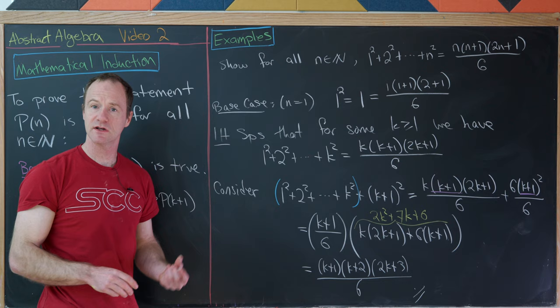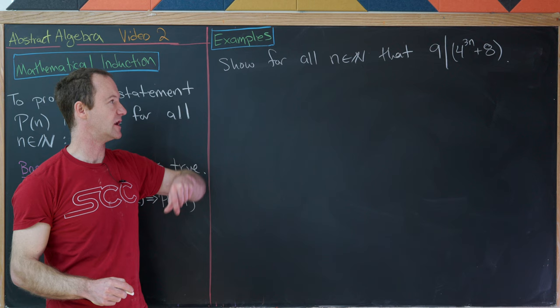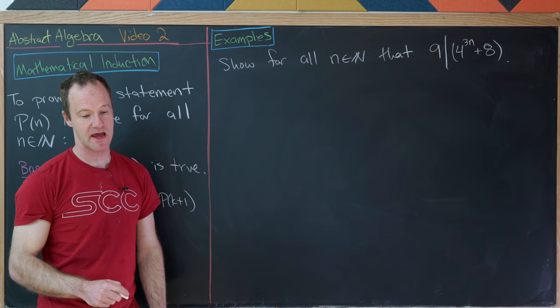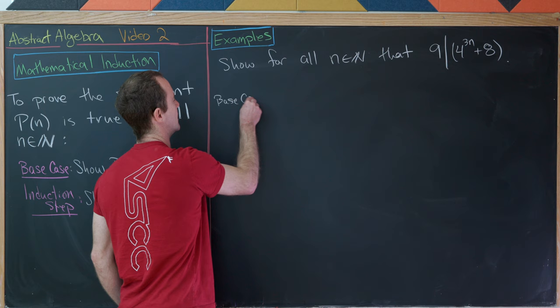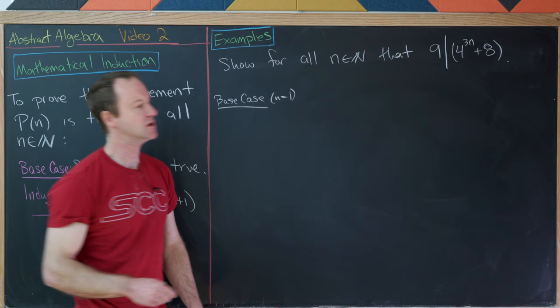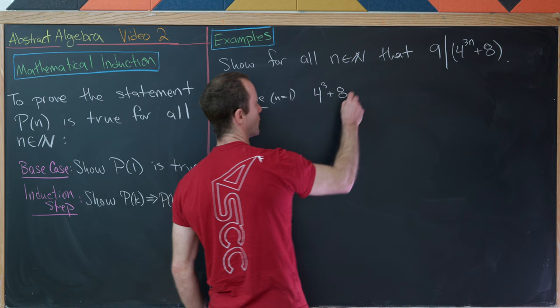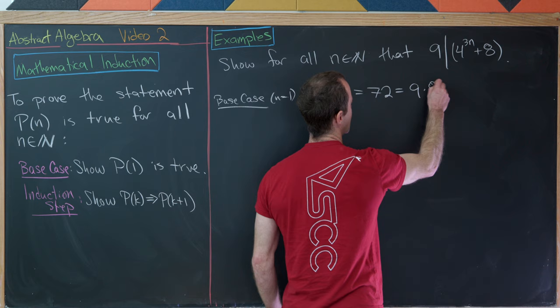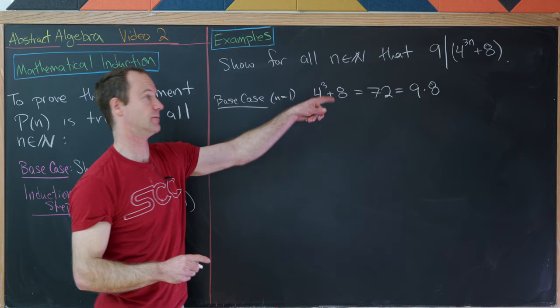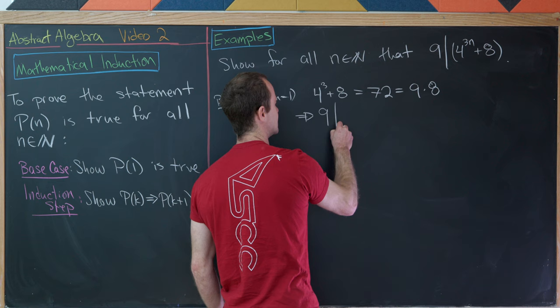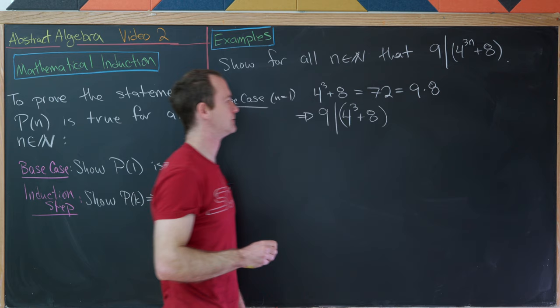For our next example, we'll show for all natural numbers N that 9 divides 4^(3N) + 8. Our base case is N equals 1: we get 4³ + 8 = 64 + 8 = 72 = 9 × 8. Writing this as a divisibility relationship, 9 divides 4³ + 8, so the base case holds.